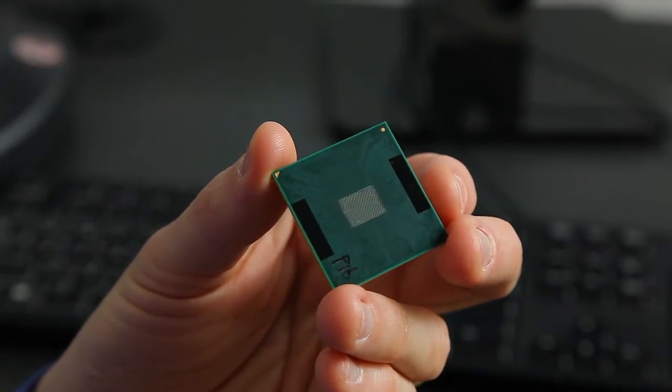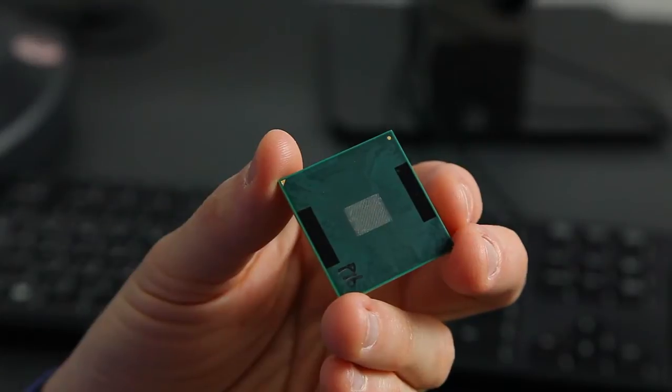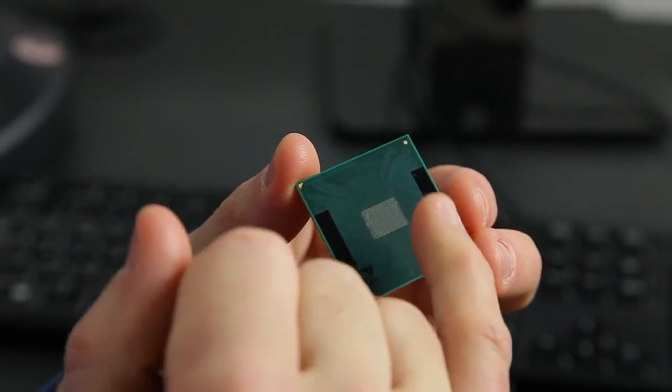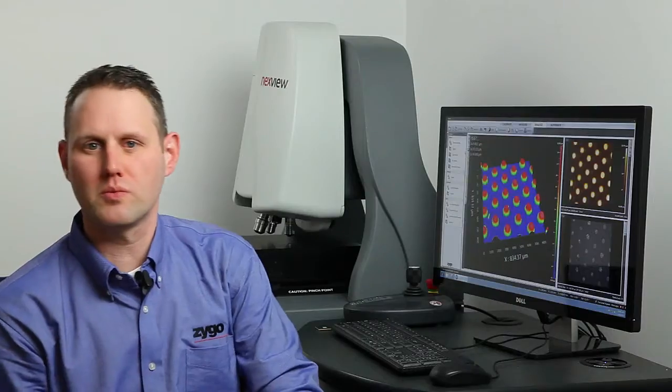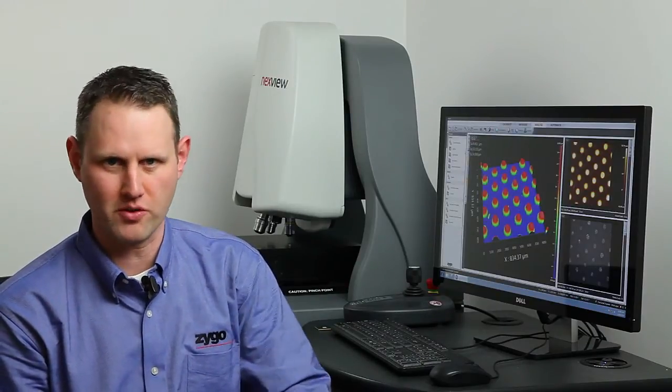So the sample we're going to be measuring is this semiconductor package showing solder bumps in this gray area in the middle. The reason an engineer might care about that is that these bumps are critical for making electrical contact between multiple surfaces, a substrate and a chip for example.